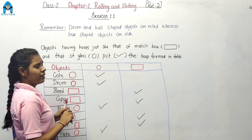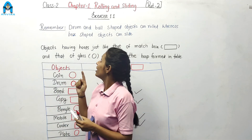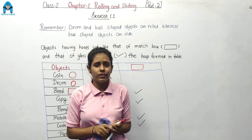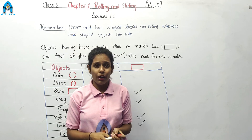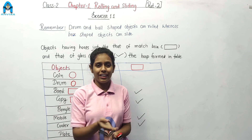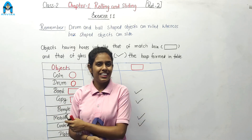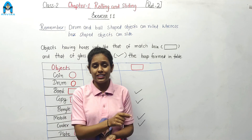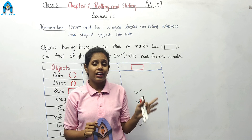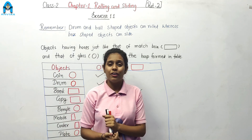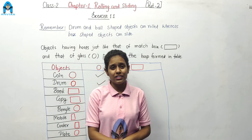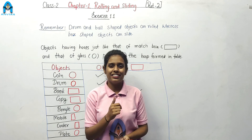Our chapter 1 on rolling and sliding is now complete. In this chapter, we learnt about objects and their shapes — some objects can roll and some can slide. Objects with a flat surface can slide, and objects with a curved surface can roll. We did exercises to understand the concept of rolling and sliding. Thank you.